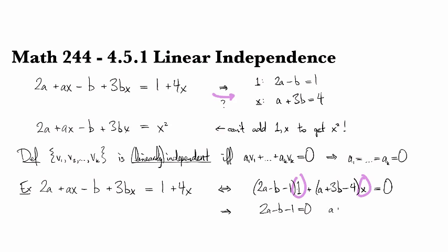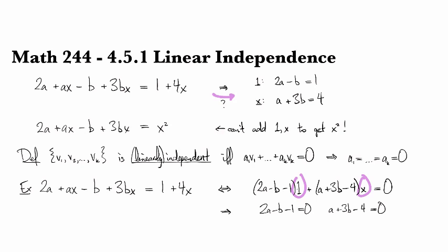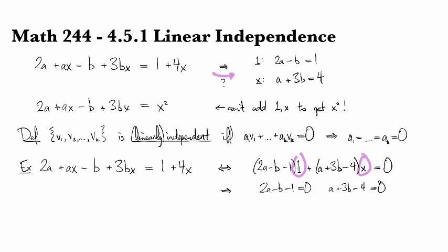And most of the time, we write that as 2a minus b equals 1, and a plus 3b equals 4, which is exactly what we started with back at the beginning.